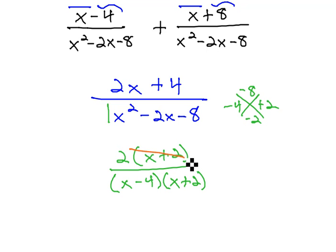Sure enough, there is reducing in this problem, in that the x plus 2's divide out, leaving our final answer of 2 over x minus 4.